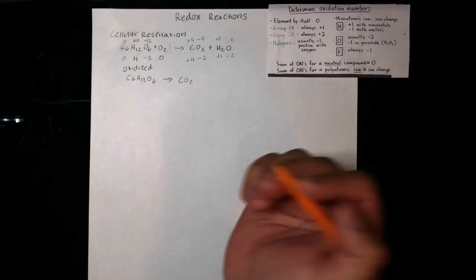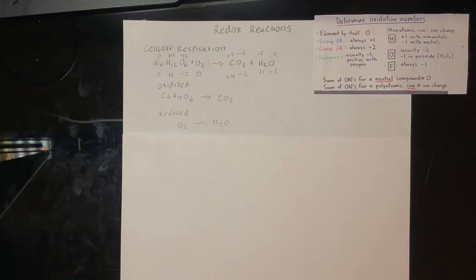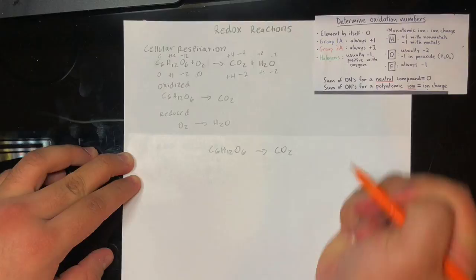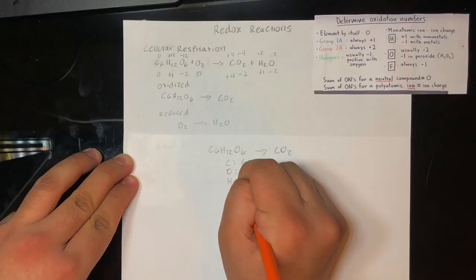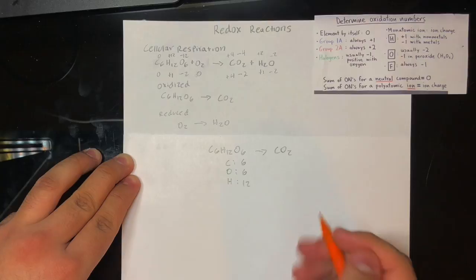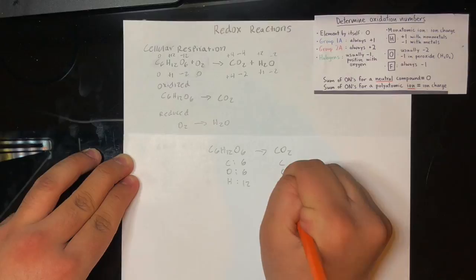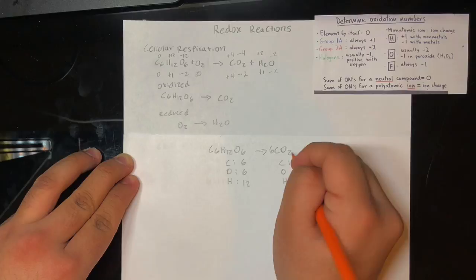Now that we know what's being oxidized and reduced, we can use the half-reactions method to balance the charges and the coefficients. We start with what's being oxidized — in this case, glucose to carbon dioxide. Now we find the coefficients: here we have six carbons, six oxygens, and 12 hydrogens in glucose, and only one carbon in CO₂, so let's put six to start balancing. Now we have six carbons and 12 oxygens, and zero hydrogens on the right.